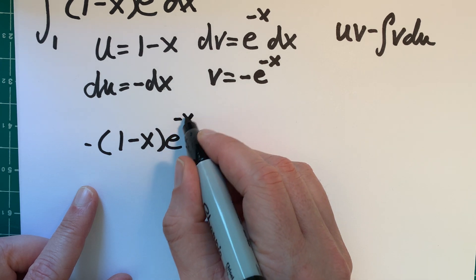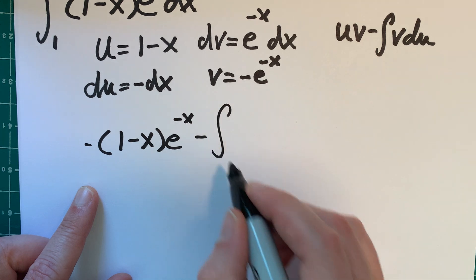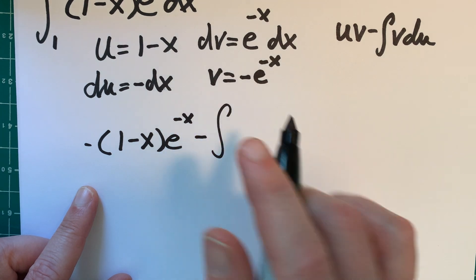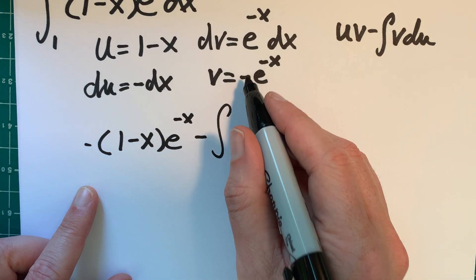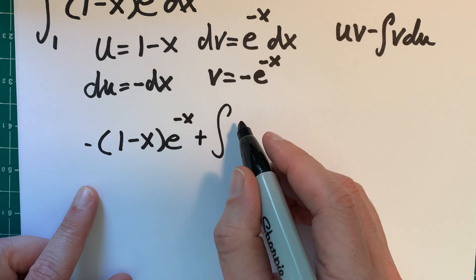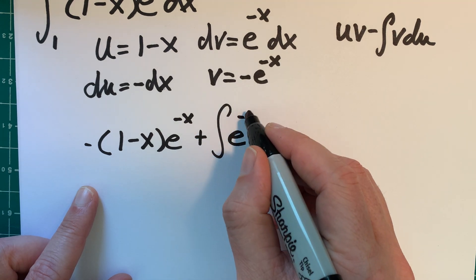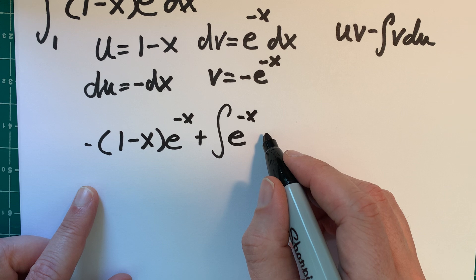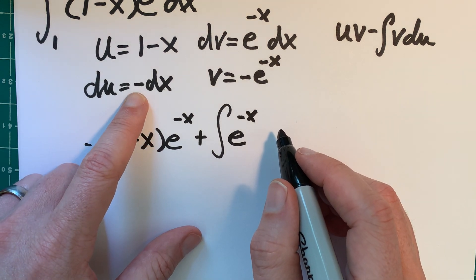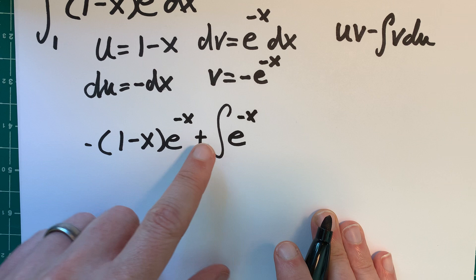e to the negative x minus the integral of v. And so we have a minus sign here, so I'll just put a plus sign there. v to the negative x du negative sign. So that's going to become, oh, I'm getting mixed up.